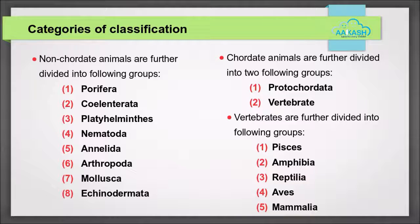Non-Chordate animals are further divided into following groups: Porifera, Coelenterata, Platyhelminthes, Nematoda, Annelida, Arthropoda, Mollusca, and Echinodermata. Chordate animals are further divided into Protochordata and Vertebrata. Vertebrates are further divided into five groups: Pisces, Amphibia, Reptilia, Aves, and Mammalia.